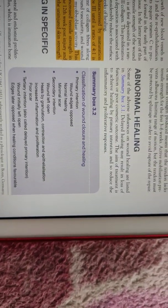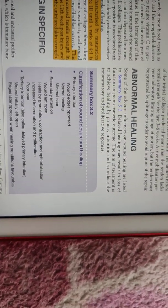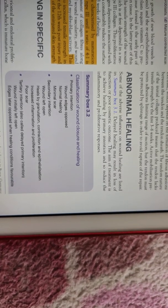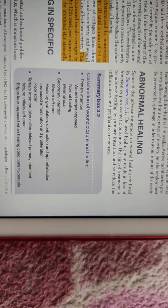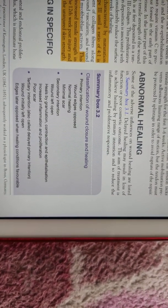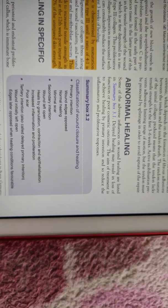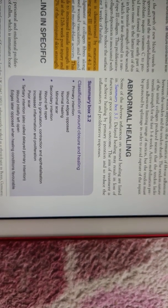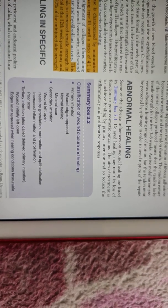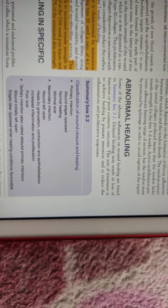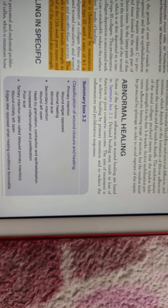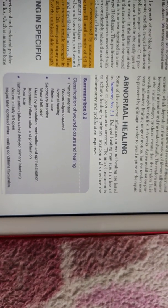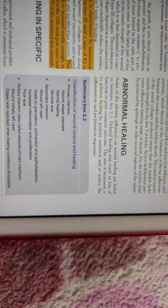We can classify wound healing into three types. Primary healing means there is no gap between the two structures; it is a clean wound with less inflammation, normal healing, and minimal scar. Second intention means the wound is left open, so it heals by granulation tissue formation, then contracture of the wound, and then epithelialization.